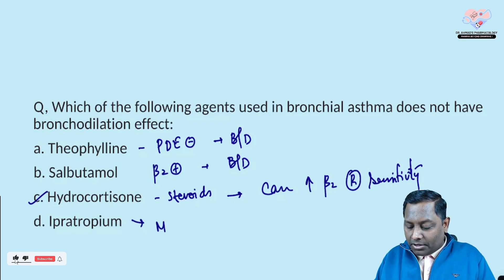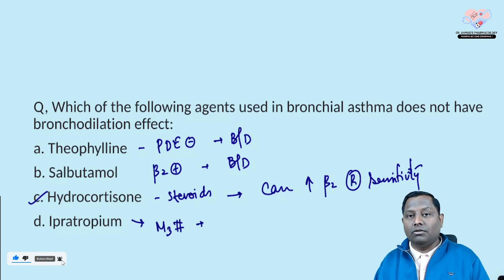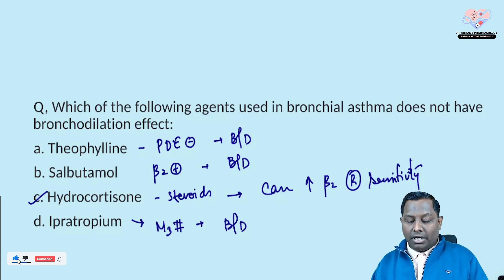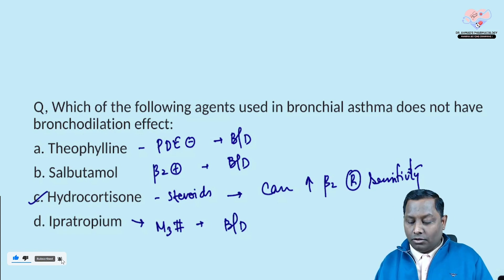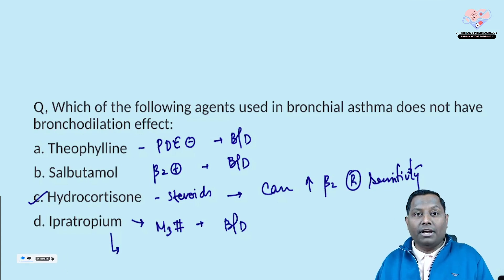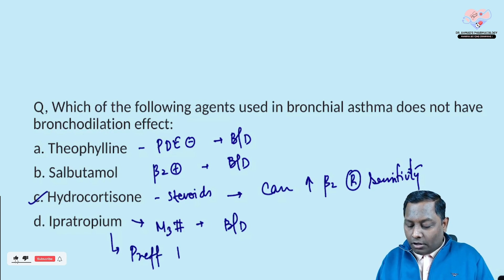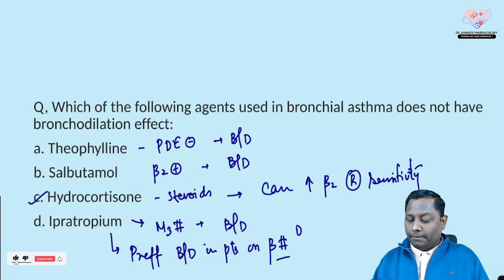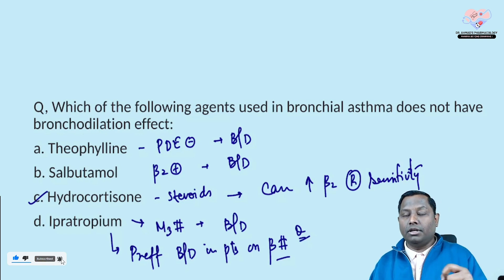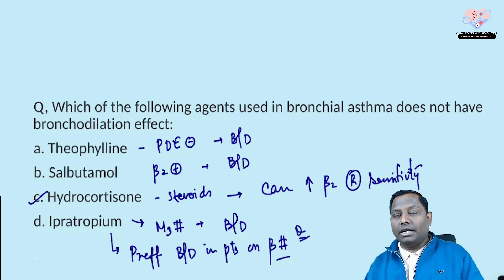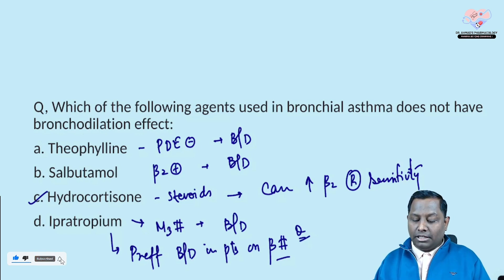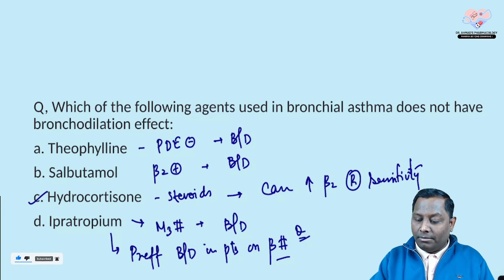Ipratropium is an M3 antagonist and is associated with indirect bronchodilation. All the others cause bronchodilation, but not hydrocortisone. One more important MCQ: ipratropium is considered the preferred bronchodilator in patients who are on a beta-blocker. So if a patient is on an antihypertensive beta-blocker and needs a bronchodilator, use an M3 antagonist — either ipratropium or tiotropium.